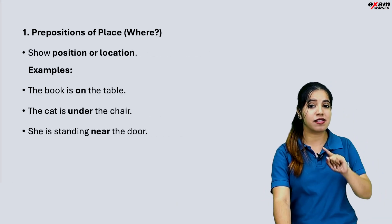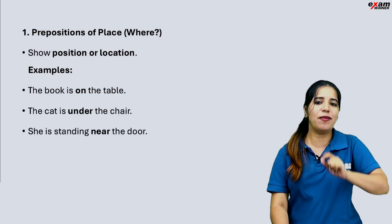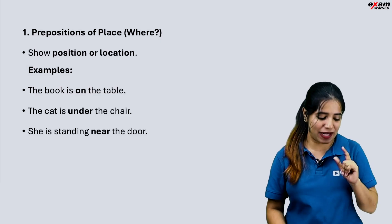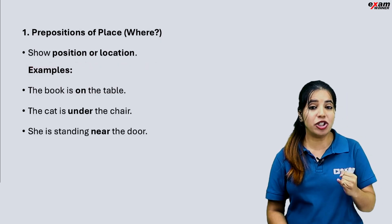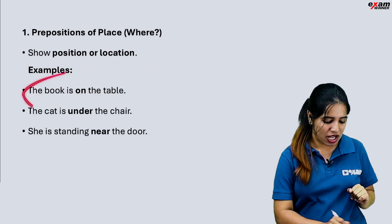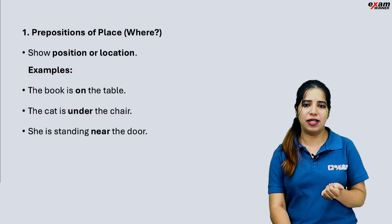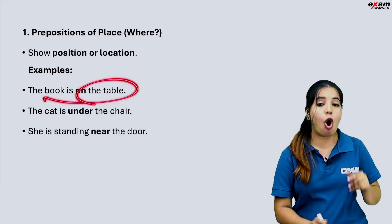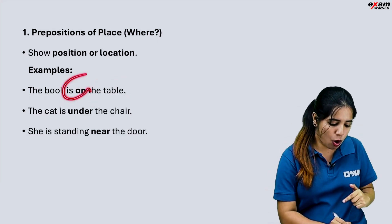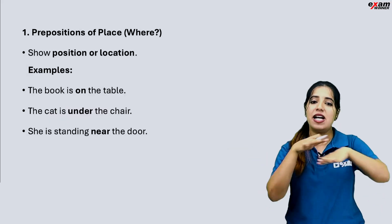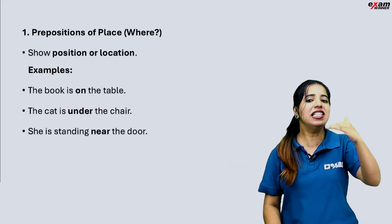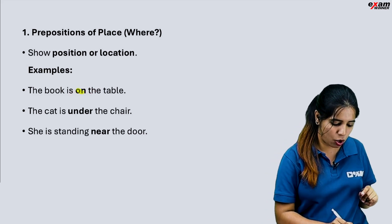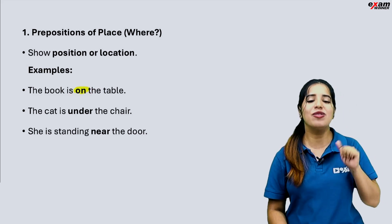First, prepositions of place, position and location. For example: 'Book is on the table.' When you are on the table surface, that is the first one — on the table.